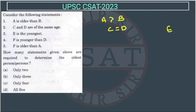F is younger than D. So now the fourth statement: F is younger than D. And the fifth: F is older than A.